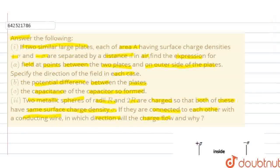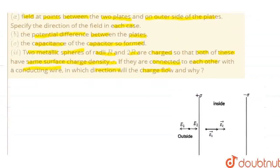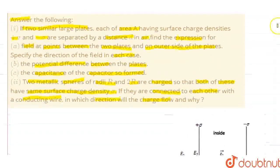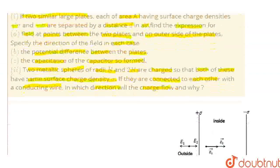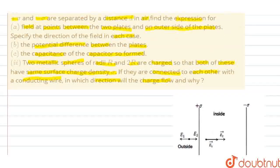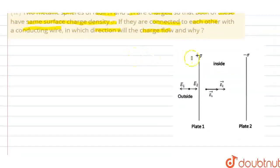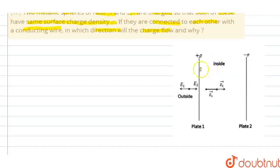Let's solve the first part of the question. We know that they have area A and surface charge densities of plus sigma and minus sigma, and are separated by distance d in air. Plate 1 is on the left side with surface charge density of plus sigma, and plate 2 is on the right side with surface charge density of minus sigma.